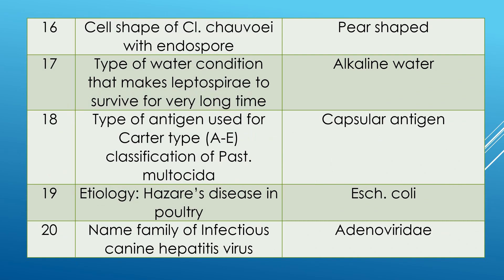Question 16: cell shape of Clostridium chauvoei when endospore is present in the cell — an important commonly asked question. When there is an endospore in Clostridium chauvoei, it appears lemon-shaped.